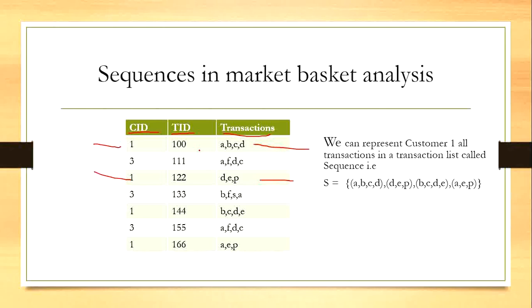So all these happened in an order, and with respect to one customer we can represent all his transactions as a sequence. So here this is transaction T1, this is transaction T3, this is transaction T4 with respect to customer one. These transactions are represented as a sequence. This is the sequence of customer one.